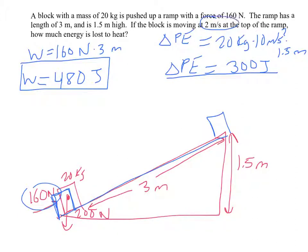It is also moving at the top of the ramp. So there's been a change in kinetic energy. Change in kinetic energy is - if we assume it was 0 at the bottom of the ramp - it's 1/2 times m, 20, times v squared. 2 squared is 4. So that ends up being 40 joules. That's how much has been used in kinetic energy.